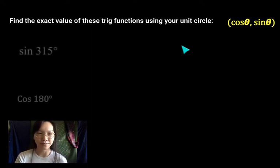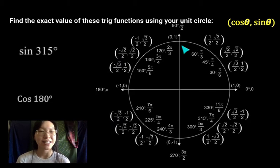So let's start with these two. Sine of 315 and cosine of 180. I'm going to make a funny face. See if you can find these values on the unit circle.